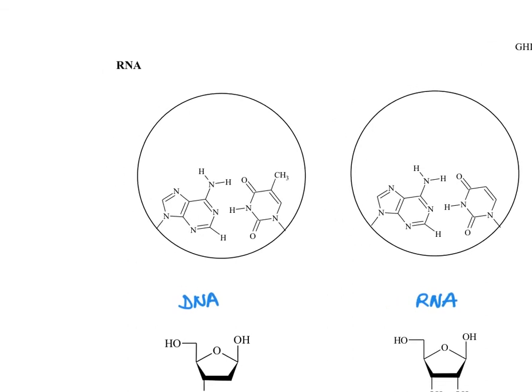The other big difference, and you may know this from biology, we have T base pairs present in DNA and we have U base pairs present in RNA. So DNA is composed of G's, A's, T's, and C's, and RNA is composed of G's, A's, U's, and C's.